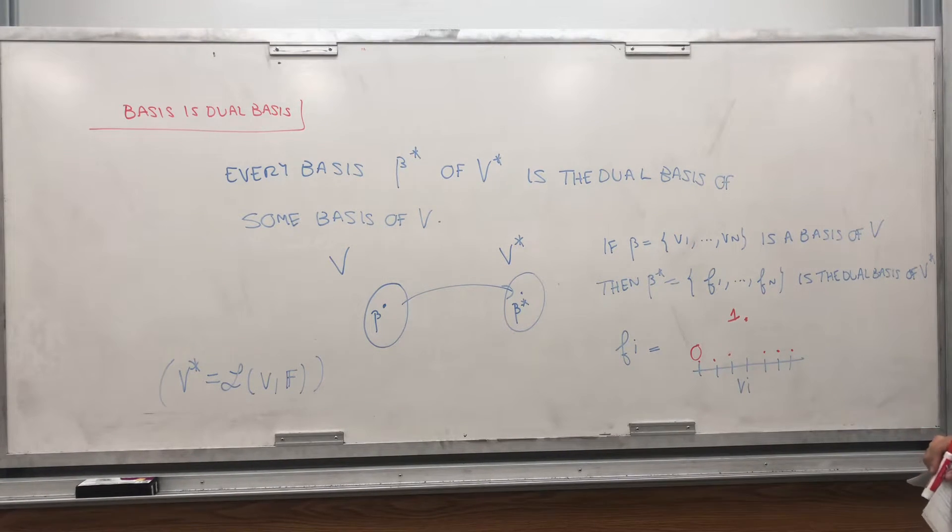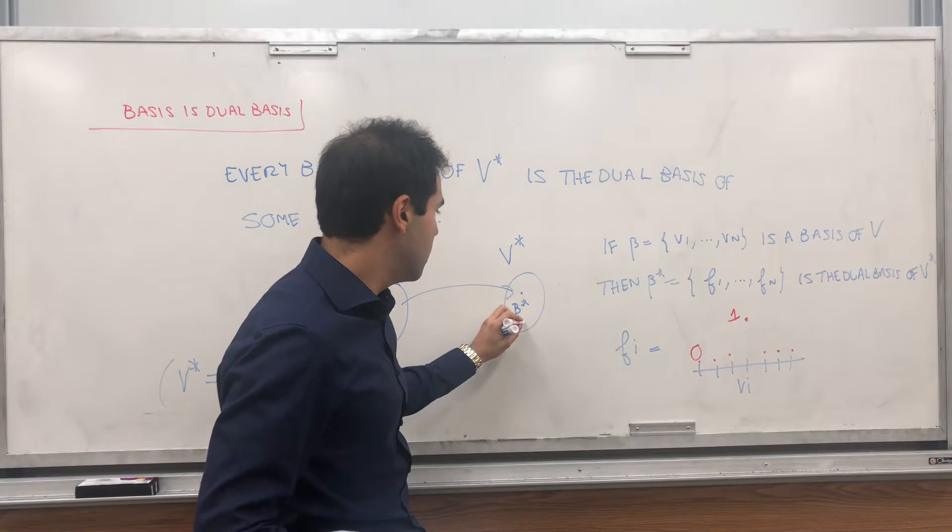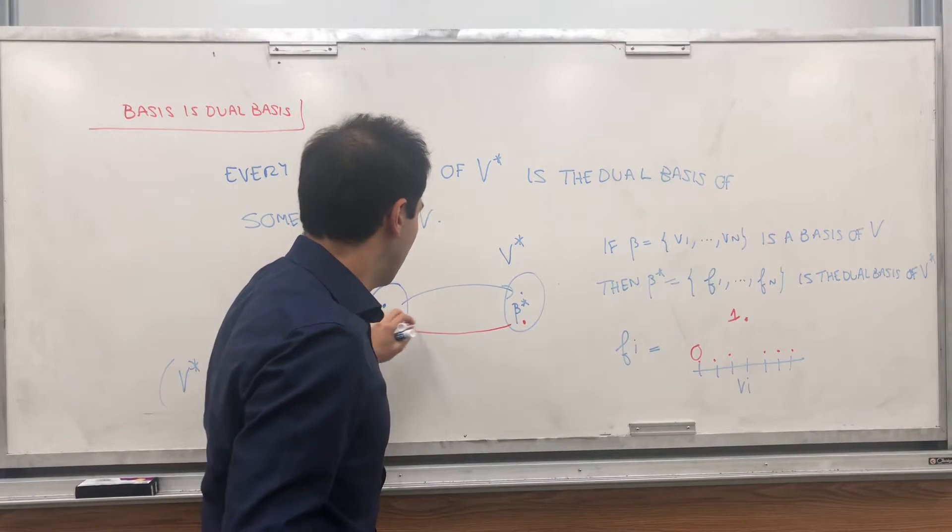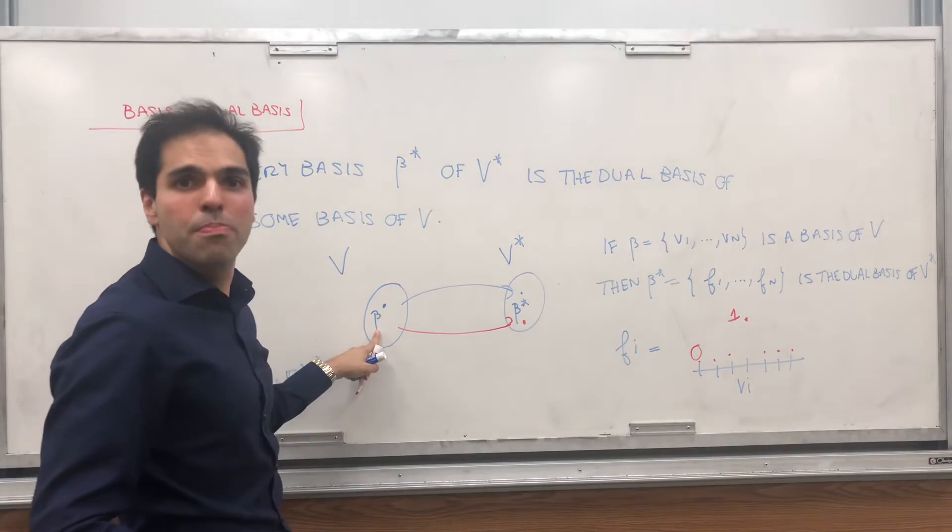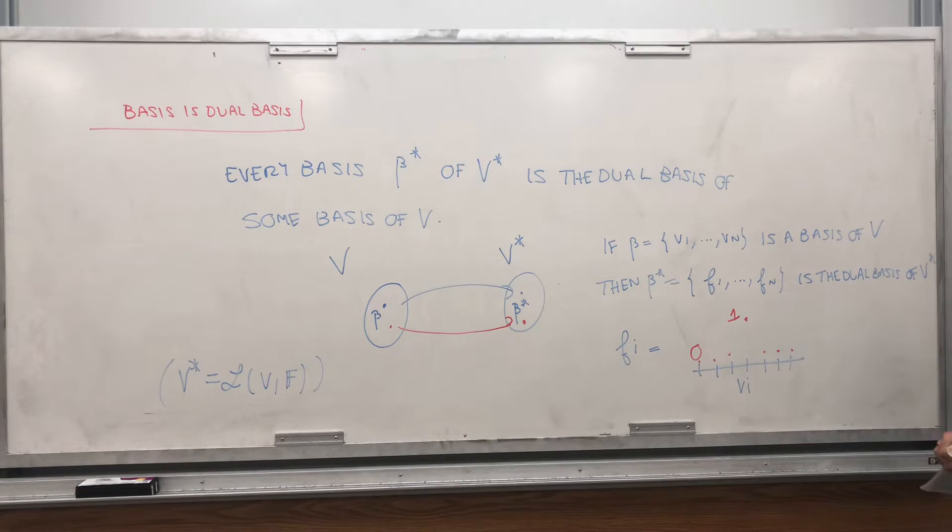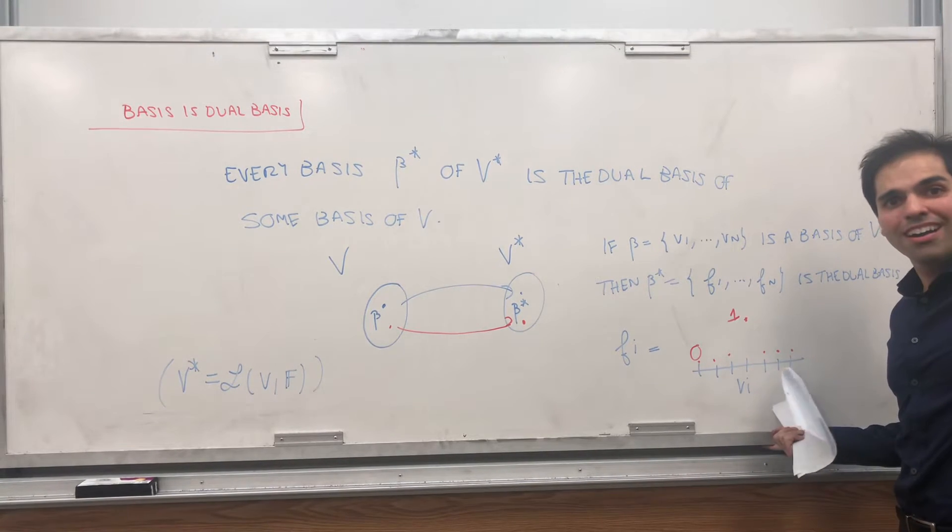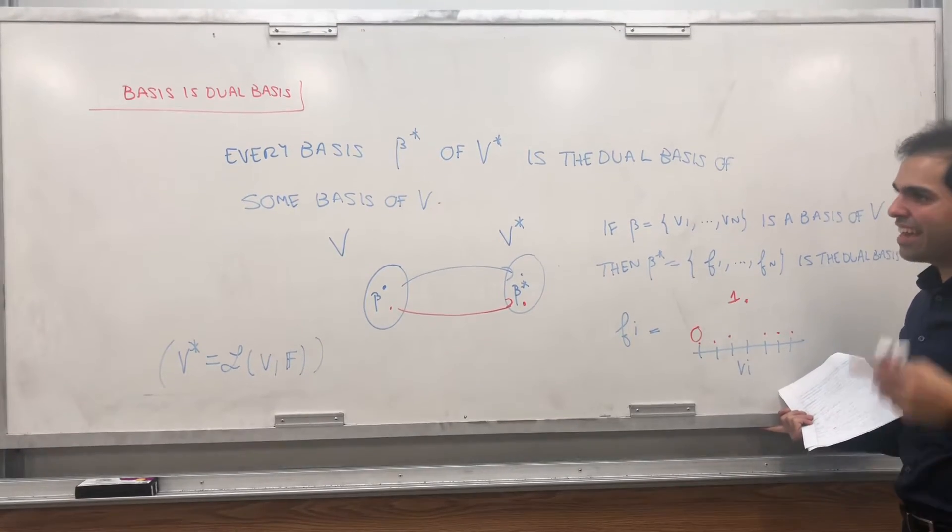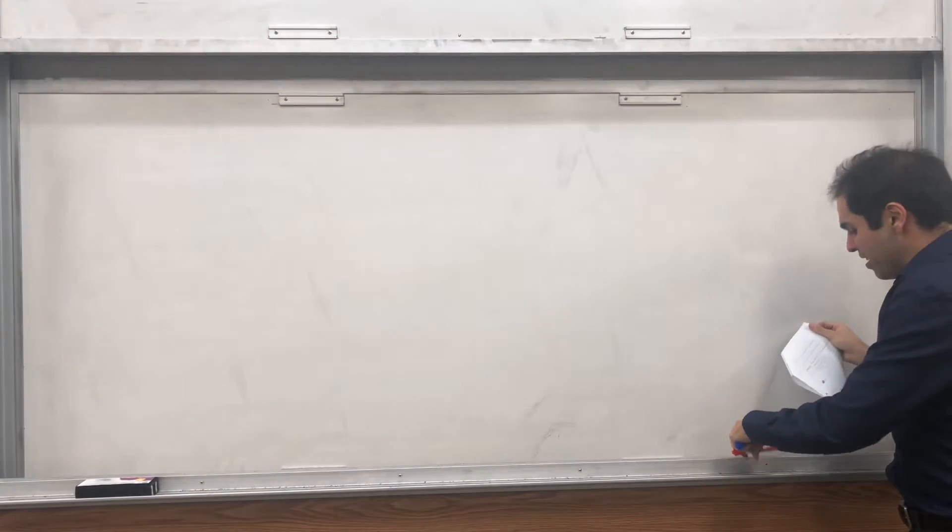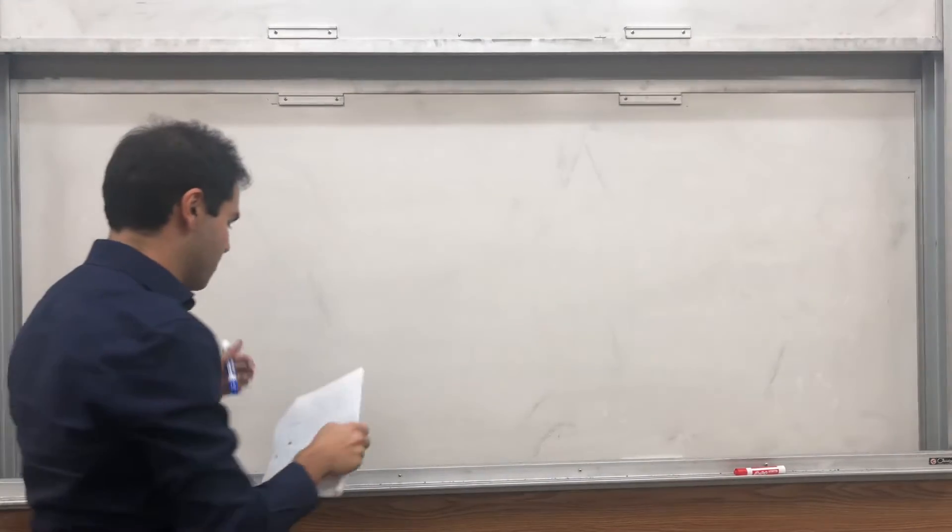What this is saying is that the reverse is also true. If I give you a random basis here, then it turns out it'll always be the dual basis of, it'll always be a dual basis of some basis of V. And in particular, if I just give you an arbitrary set of functionals, I can always find a basis such that the functional is 1 on the first vector, 0 everywhere else, 1 on the second vector, 0 everywhere else, etc. And I'll give you a concrete example in another video. But for now, we'll just try to prove this.